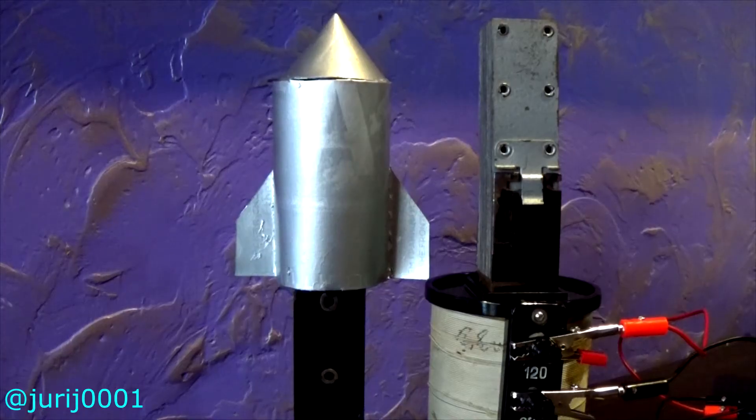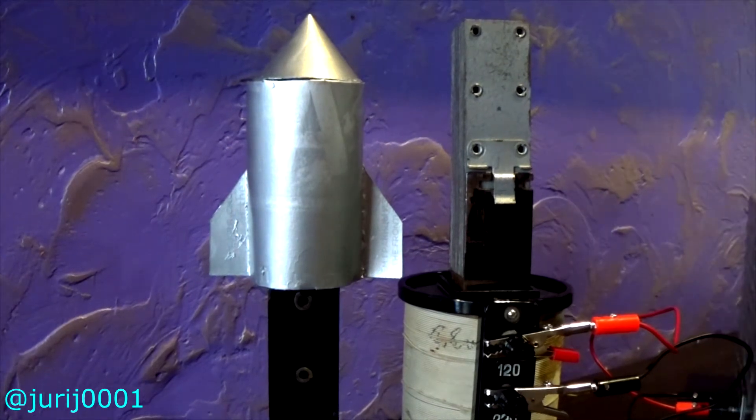When an alternating voltage is applied in a conductive enclosed ring, eddy currents occur. But why does the ring fly out?